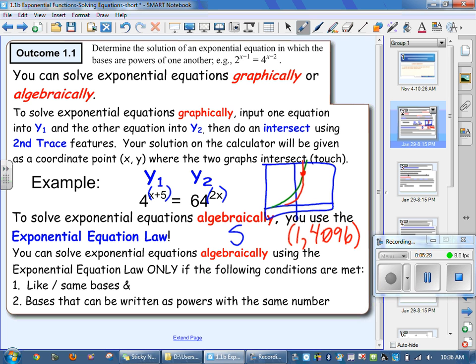My intersection was at 1 and 4096. So since my coordinate point always goes X, Y, this is X, this is Y. My solution is my X. So now I know in this equation, X is going to be equal to 1. We're going to prove that now algebraically. So we found X equals 1 here. We're going to learn how to prove it algebraically.